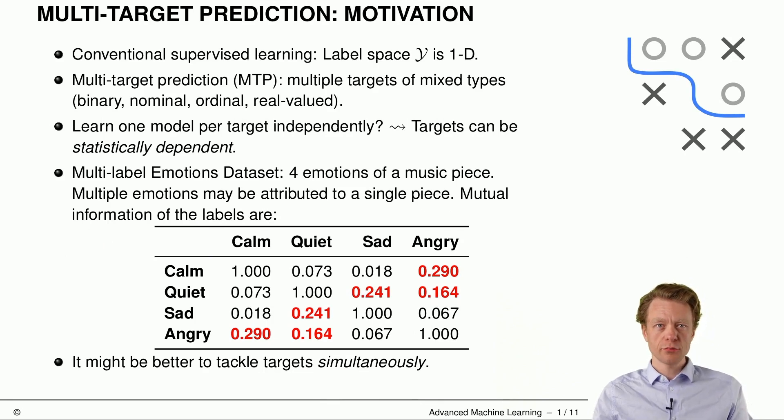What's multi-target prediction? In conventional supervised learning, the label space will be one-dimensional. This can be a real value, it can be something from 0-1, or it can be some categorical target as well, but it's just one dimension. In multi-target prediction we have multiple targets, as the term suggests, and these can be of mixed types. So this means we do not have only one target but two different targets, for example a real value and a binary other target.